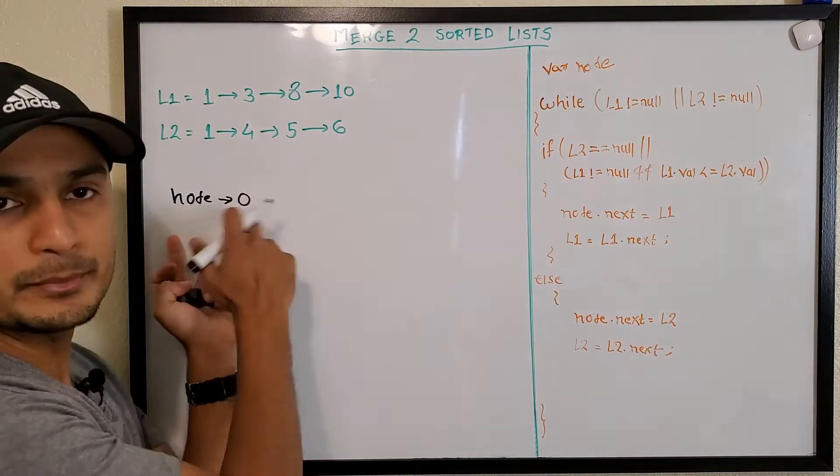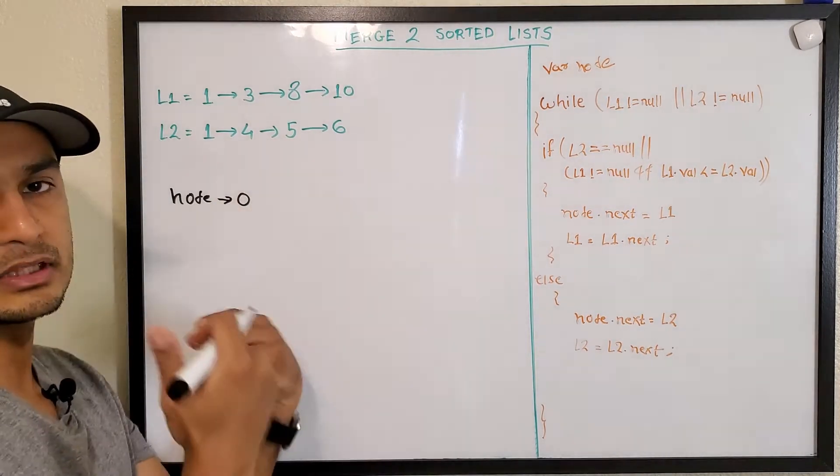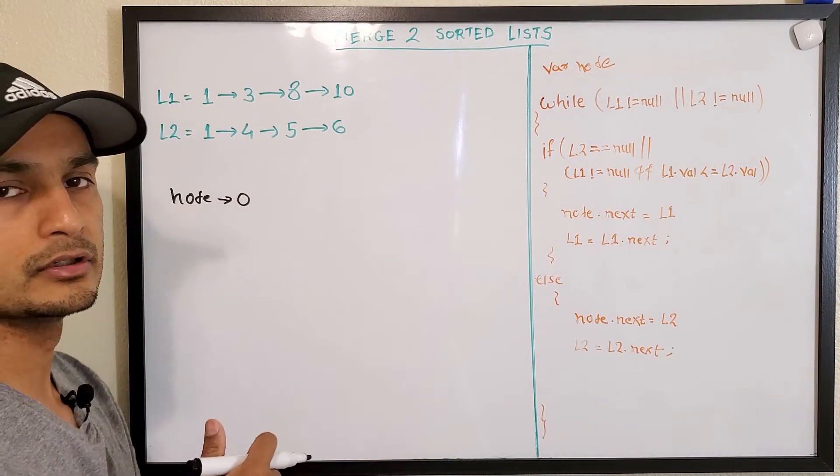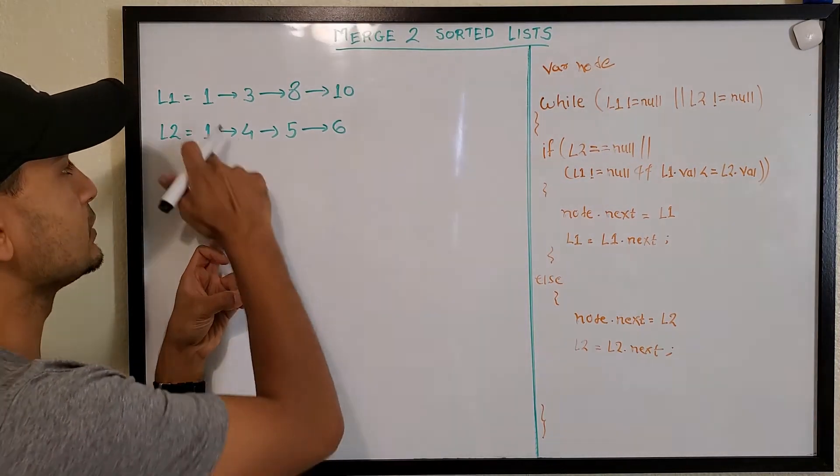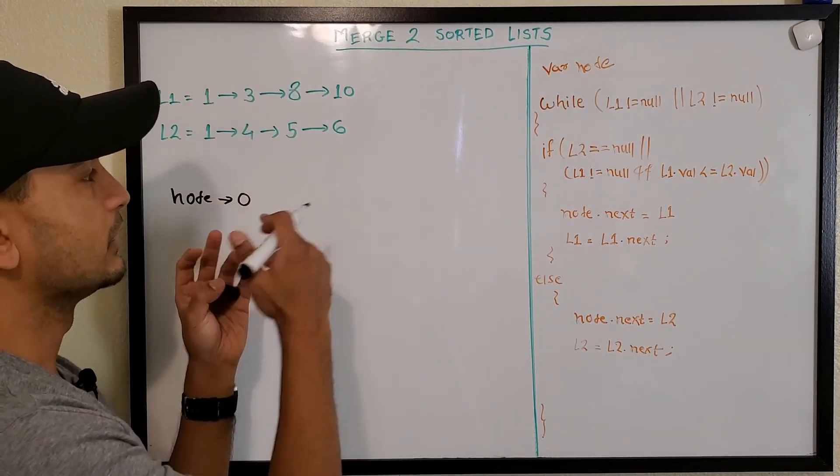This would be our return list or the thing that we'll be returning as a merged list. So we'll keep pointing to these elements such that we get one list which is sorted.